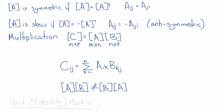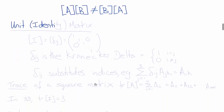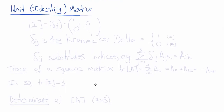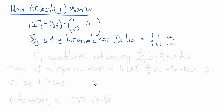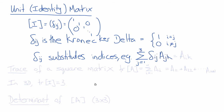An important matrix in matrix algebra is the unit or identity matrix, often denoted I, which has components of 1 along the diagonal and zeros on all off-diagonal components. In continuum mechanics, we refer to the components of the identity matrix as delta IJ, known as the Kronecker delta — equal to 1 when I equals J, and 0 when I is not equal to J. A simple property of delta IJ is that it substitutes indices: the sum of delta IJ times AJK equals AIK, because delta IJ switches index J to index I.